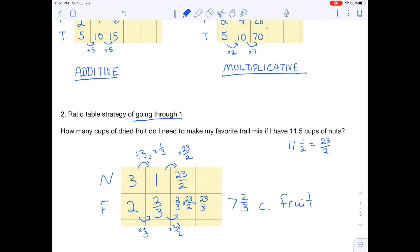So again, what did I do here? I used multiplicative reasoning to get down to one because I can easily scale one up to any number that I want to.